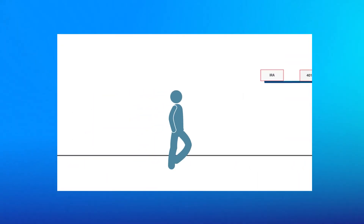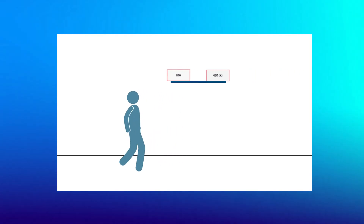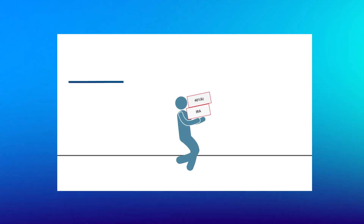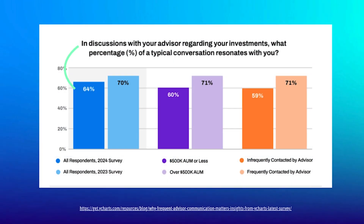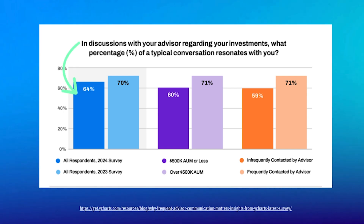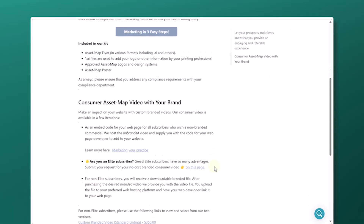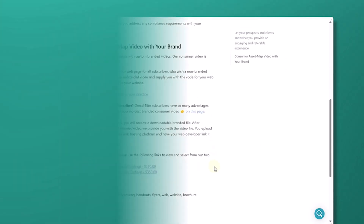In addition, we can also quickly customize our branded marketing video, free for any elite subscribers, which explains the AssetMap process as a service in detail, ready for your clients to understand how your business is different from all the other advisors. Did you know that clients find only 64% of content resonates with them in meetings with their advisors? So it's critical to enhance client comprehension of your recommended strategies by using our plug-and-play suite of marketing materials. Check out our customer support article for more information on how to get started with the AssetMap advisor marketing kit.